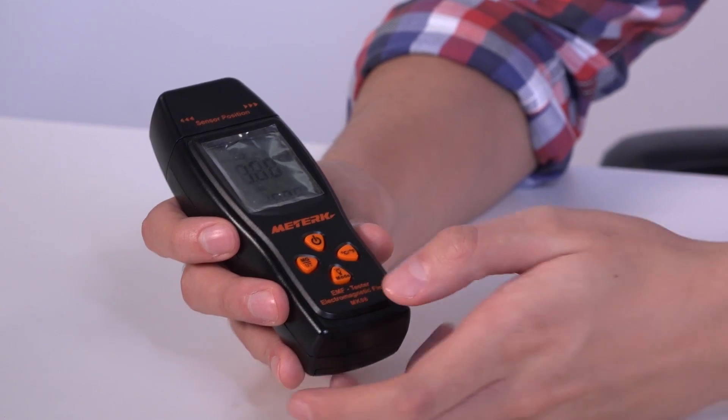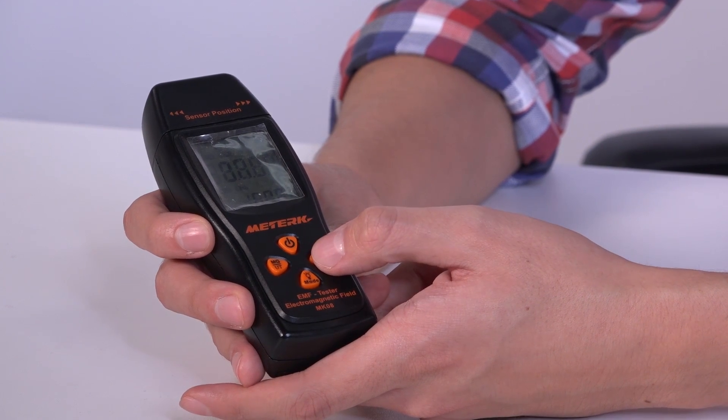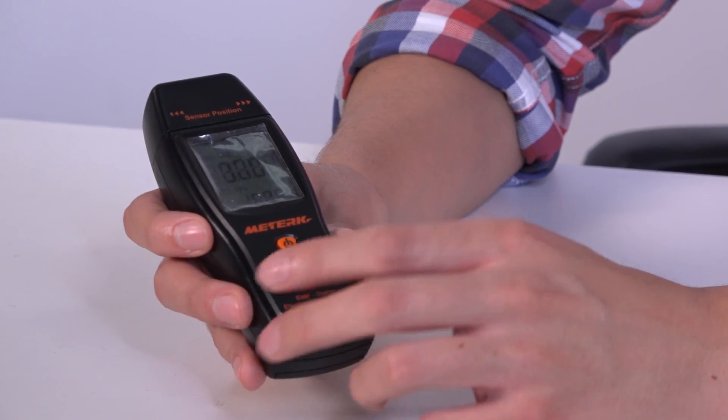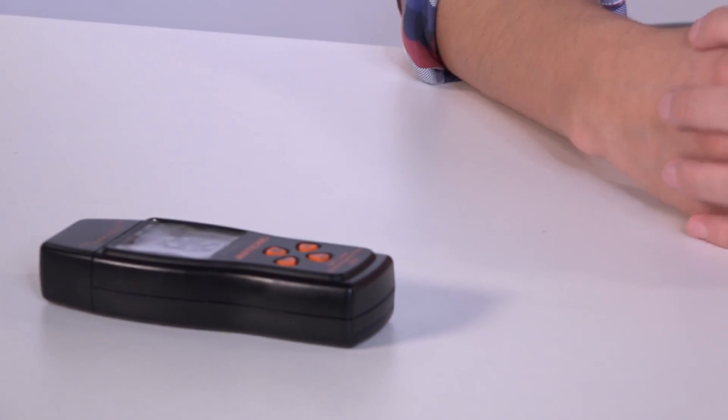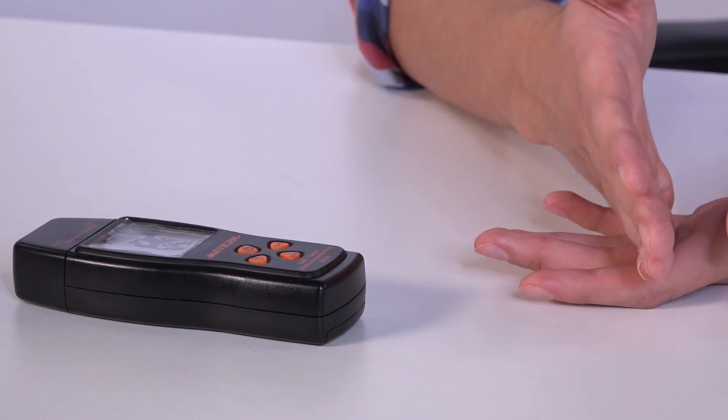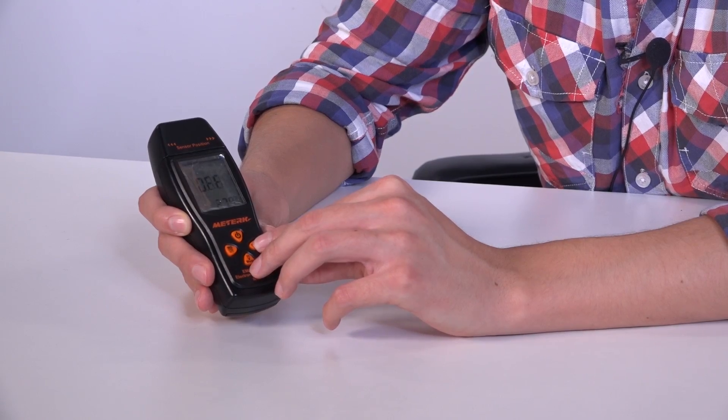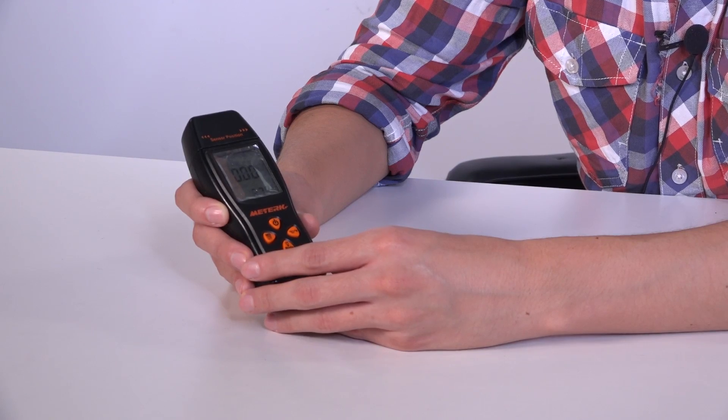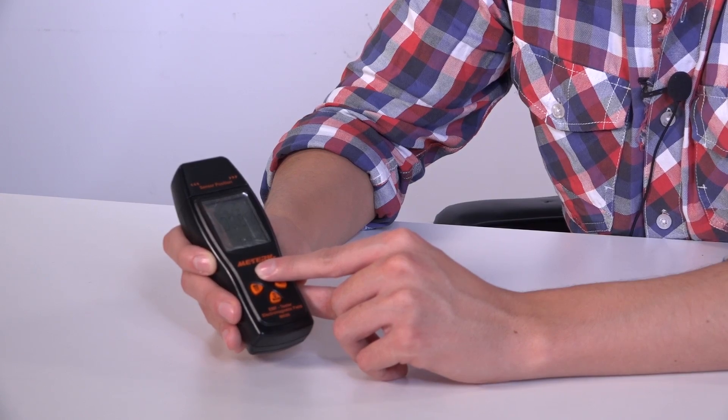And the long press of this button will allow us to turn on or off the function of timer. For example, if it's on, if we forget and we leave our device turned on, it won't consume any battery after 10 minutes. It will automatically turn off. But if we turn it off, it will continue to measure and show readings until we turn it off manually with the power button.